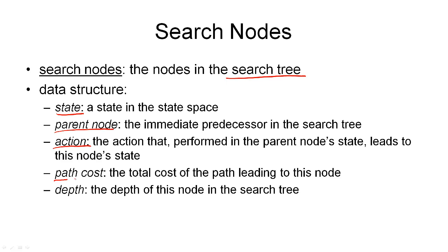We also want to store the path cost in a search node — that is the total cost of the path leading to this node in the tree. Finally, we can store the depth in the tree as part of the node, which allows us to do a simple cutoff if we go too deep in the search tree. So these are the five components that make up a search node: the state, the parent node, the action, the path cost, and the depth.